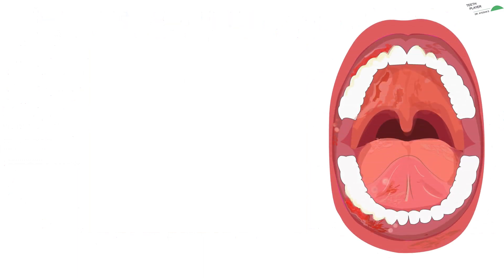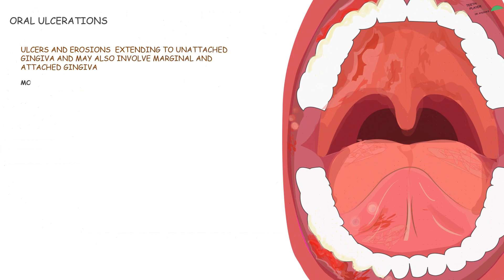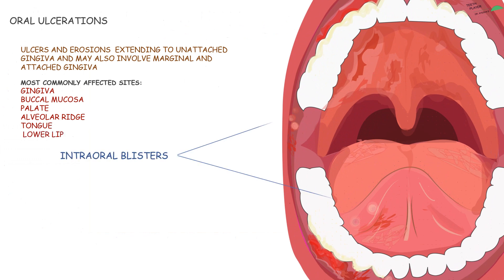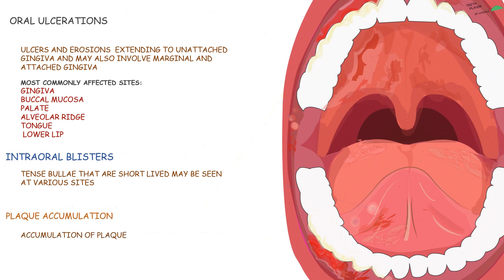Let's see a few of the clinical signs associated with this disease. We'll see intraoral ulcerations — ulcers and erosions extending to unattached gingiva, and may also involve marginal and attached gingiva. Most commonly affected sites include gingiva, buccal mucosa, palate, alveolar ridge, tongue, and the lower lip. We'll also see intraoral blisters in the form of tense bullae that are short-lived and may be seen at various sites, as well as plaque accumulation due to poor oral hygiene maintenance, which may superimpose an additional inflammatory response.